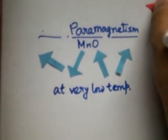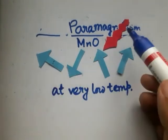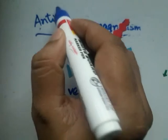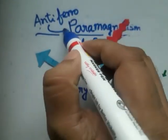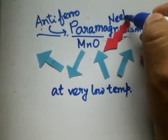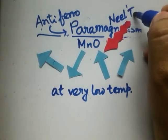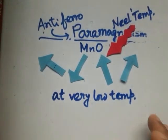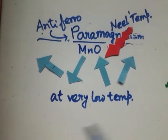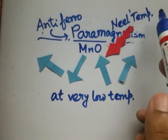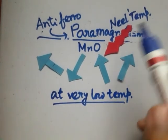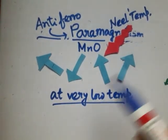The temperature at which this transition occurs — from antiferromagnetism to paramagnetism — is called the Néel temperature. So antiferromagnetism is observed at very low temperatures and is destroyed at the Néel temperature, above which the substance becomes paramagnetic.